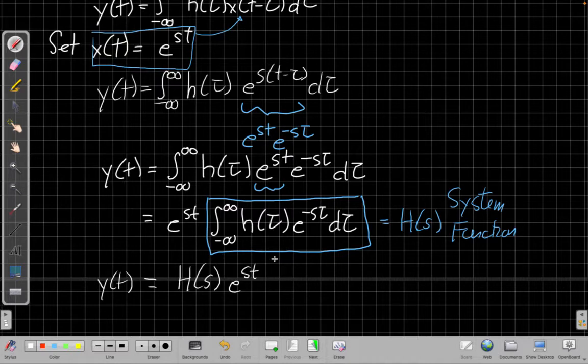So that's a very important property, a very remarkable property. It also explains why e to the st is a good thing to guess for a differential equation because if that differential equation is implementing a linear time invariant system, that kind of output is very natural to the system. Those are outputs that are very natural to LTI systems.